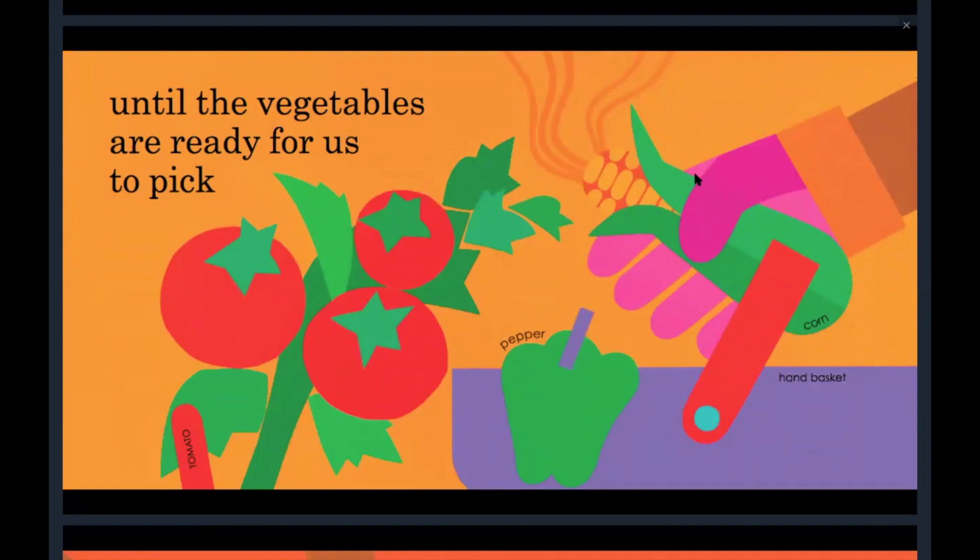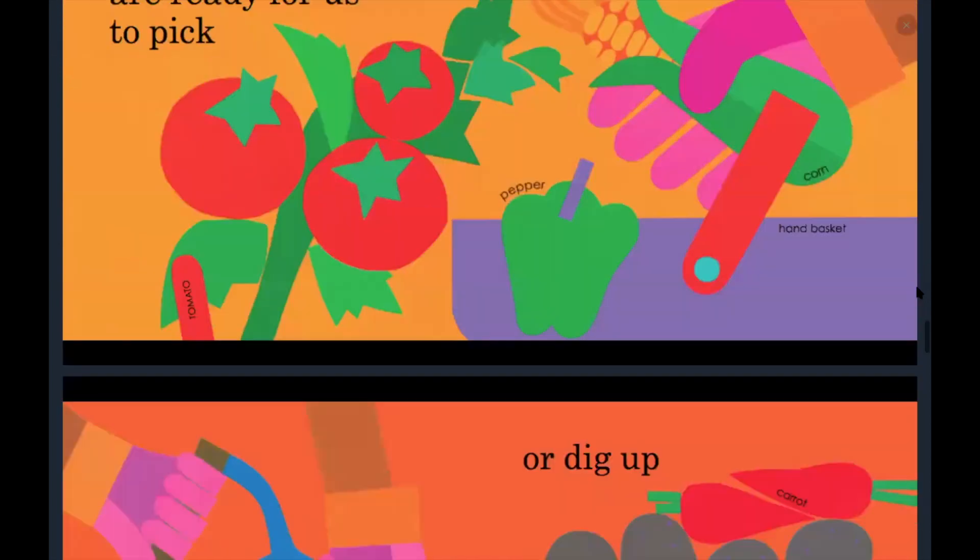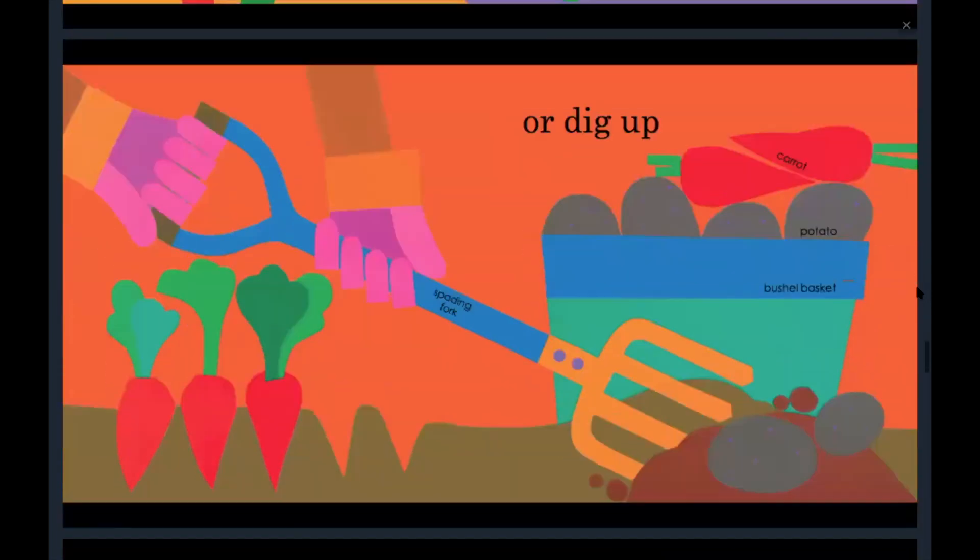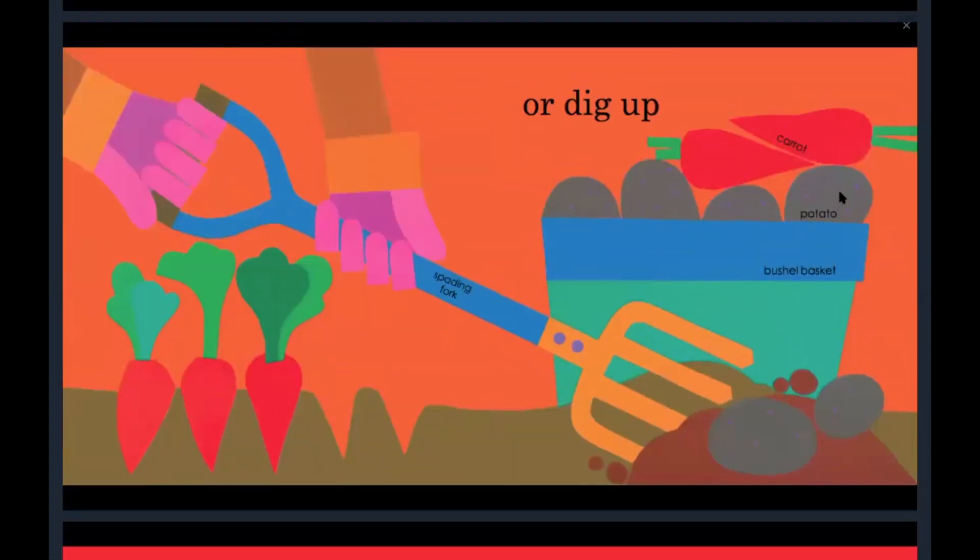I see corn and a pepper and some tomatoes. Or dig up. There's potatoes and carrots. Those are vegetables you have to dig out of the ground. Sometimes they grow underneath the soil, not on top.